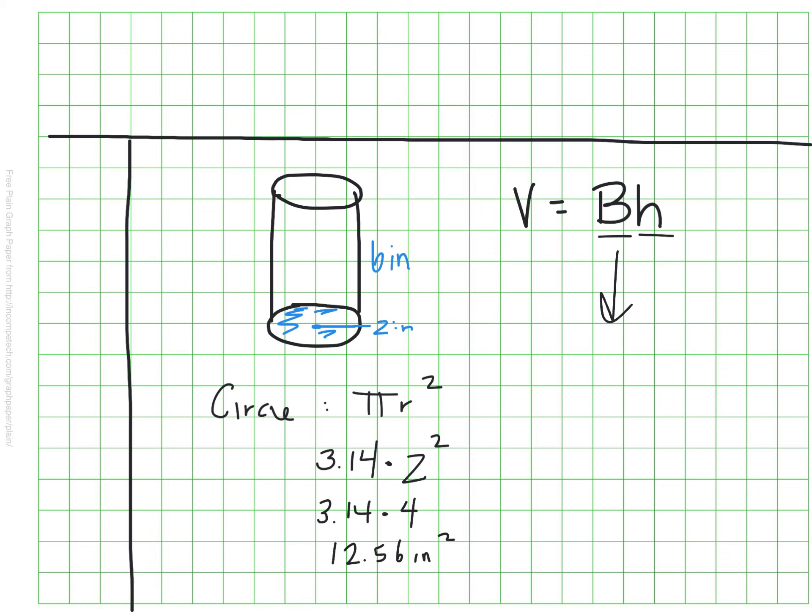And then using that as our big B, we would take that and we'd say, well, that's how many squares fit on this first layer, but we can fit 6 layers going up our cylinder. So we would multiply that by 6, which means we would be able to have a total volume of 75.36 inches cubed.